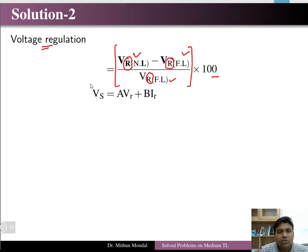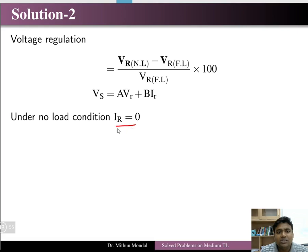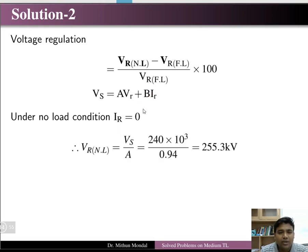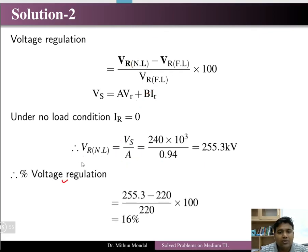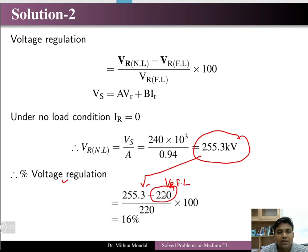At no-load, the receiving end current IR = 0, so VS = A·VR(no-load). Therefore, VR(no-load) = VS / A. With VS = 240 kV and A given, we calculate VR(no-load). Substituting into the voltage regulation formula with the full-load receiving end voltage gives a voltage regulation of 16%.